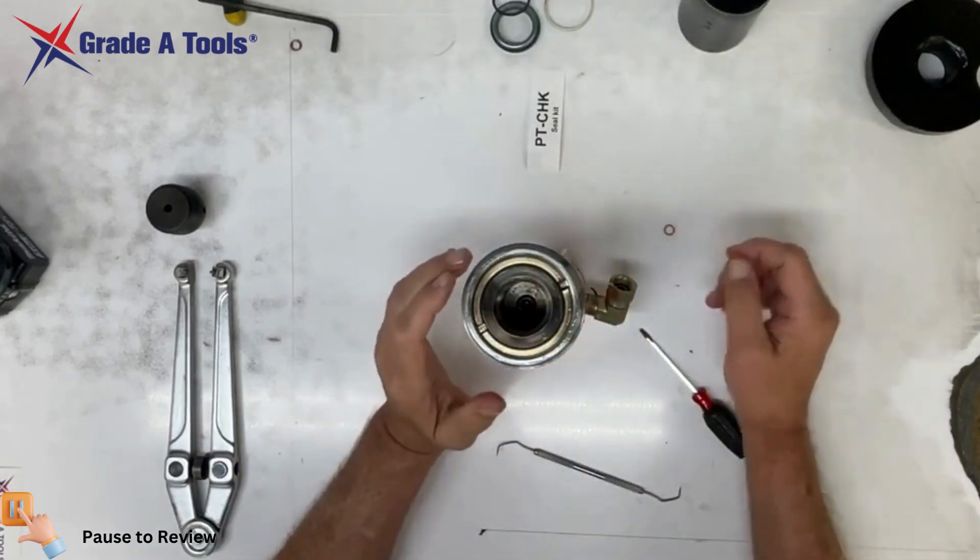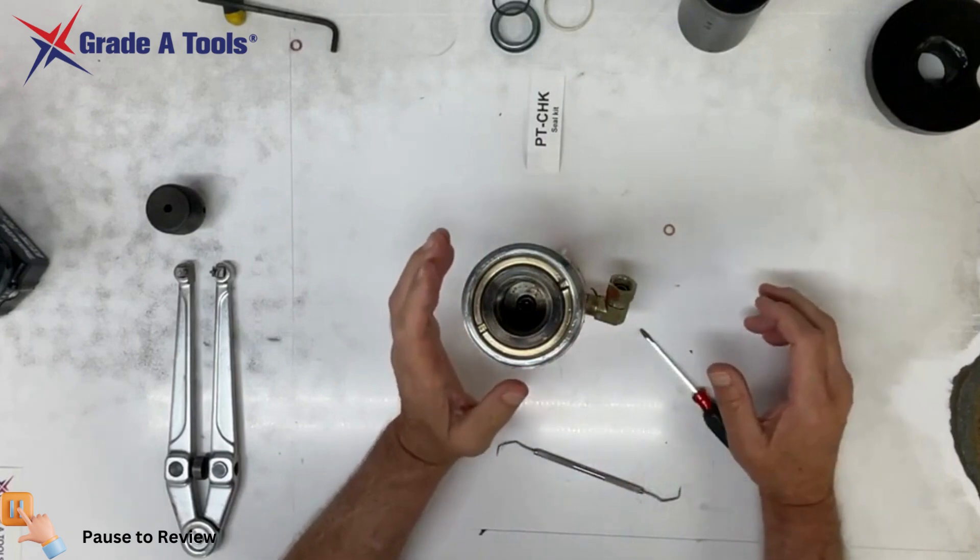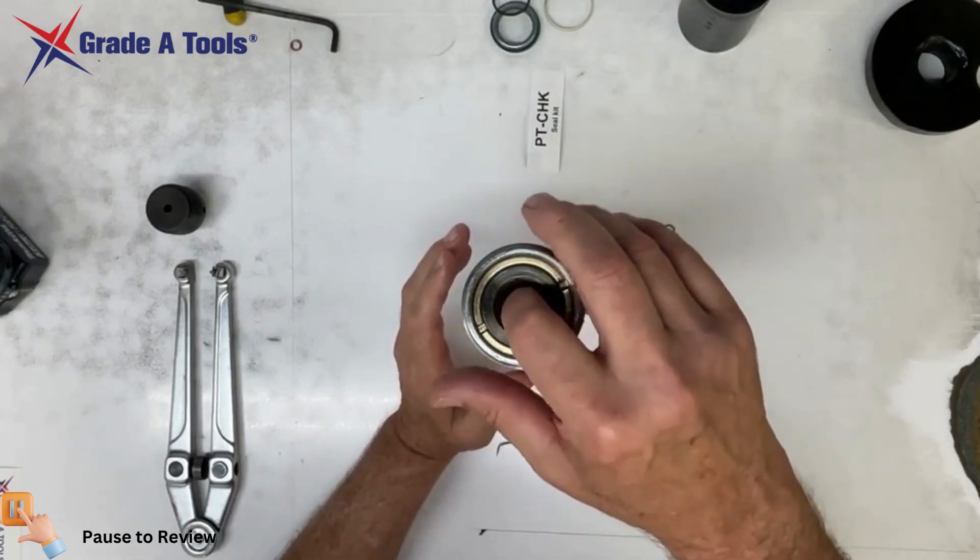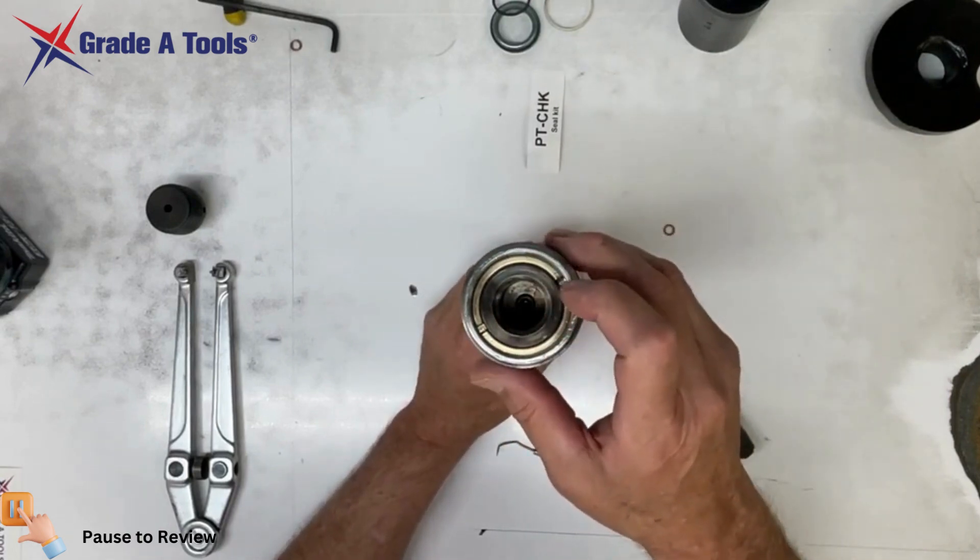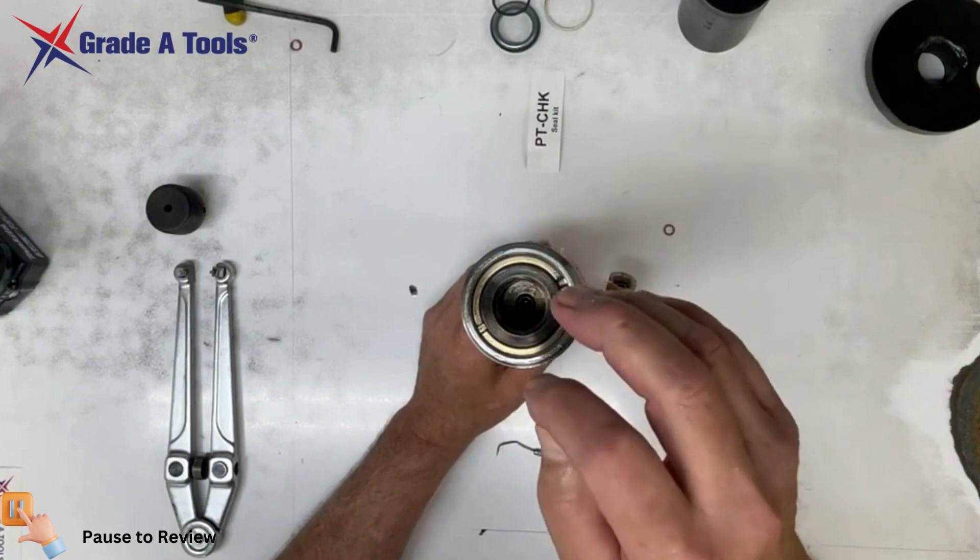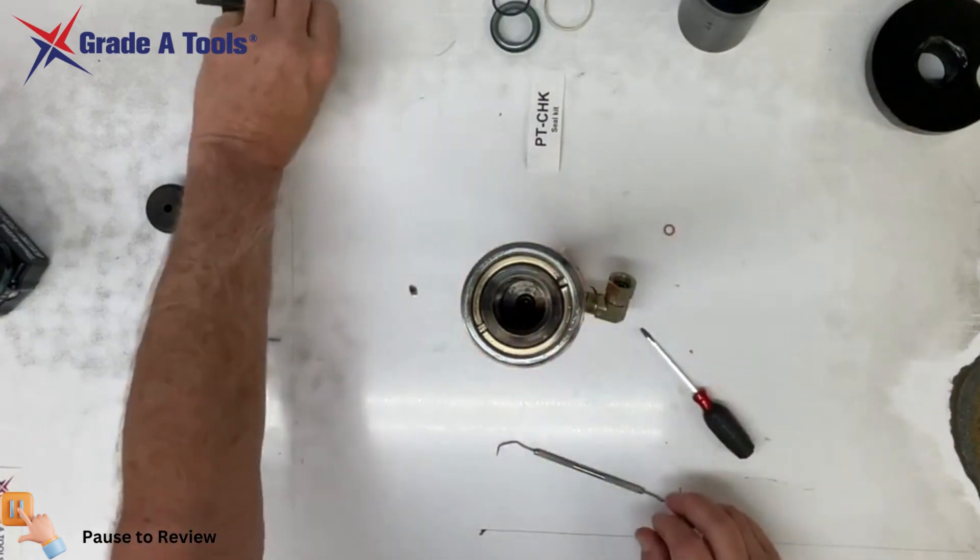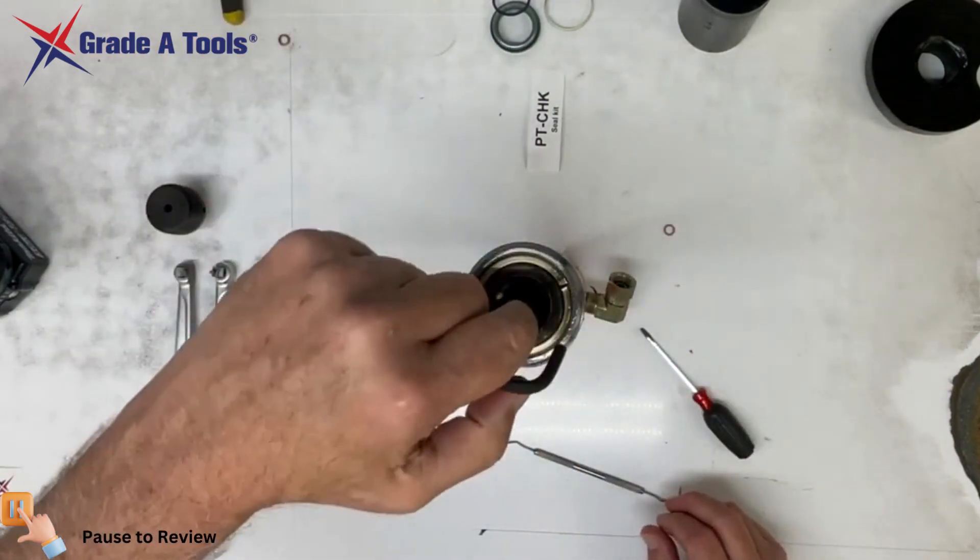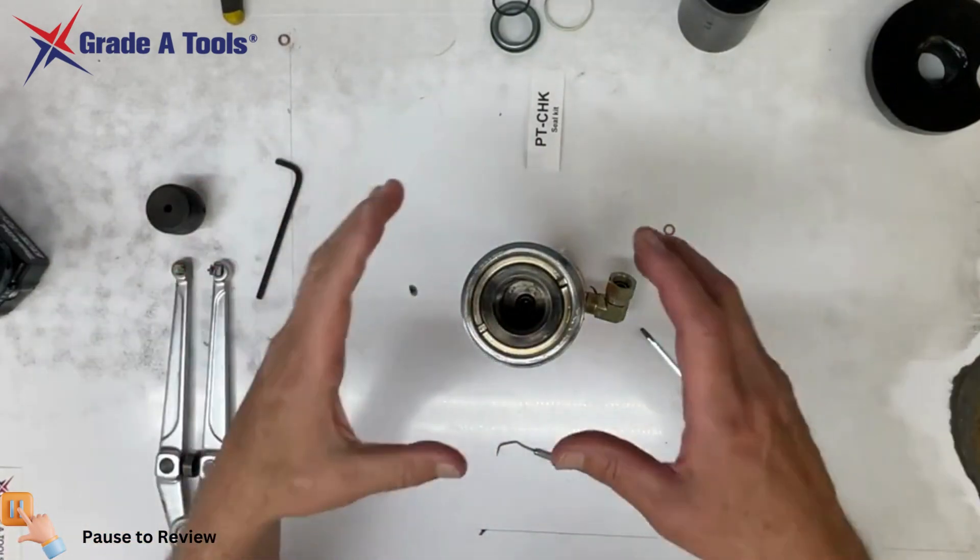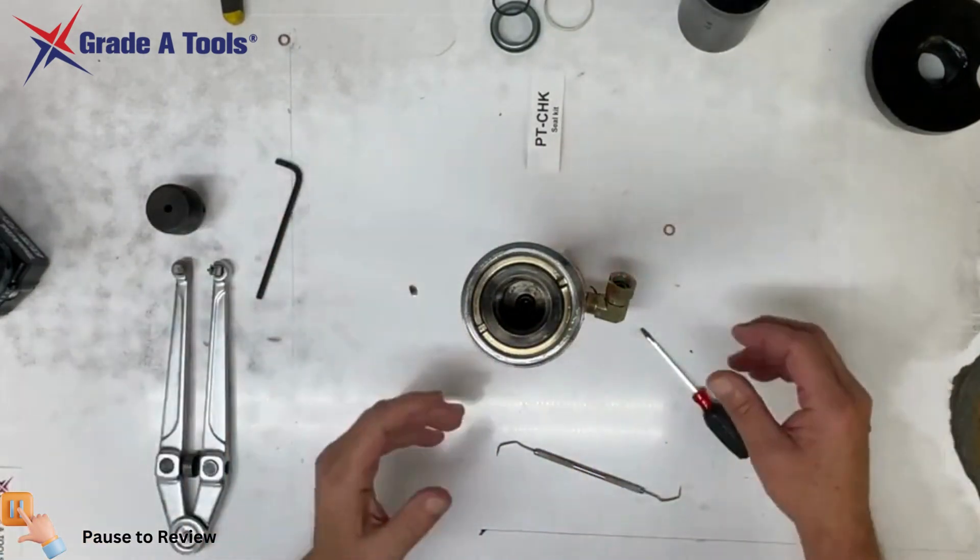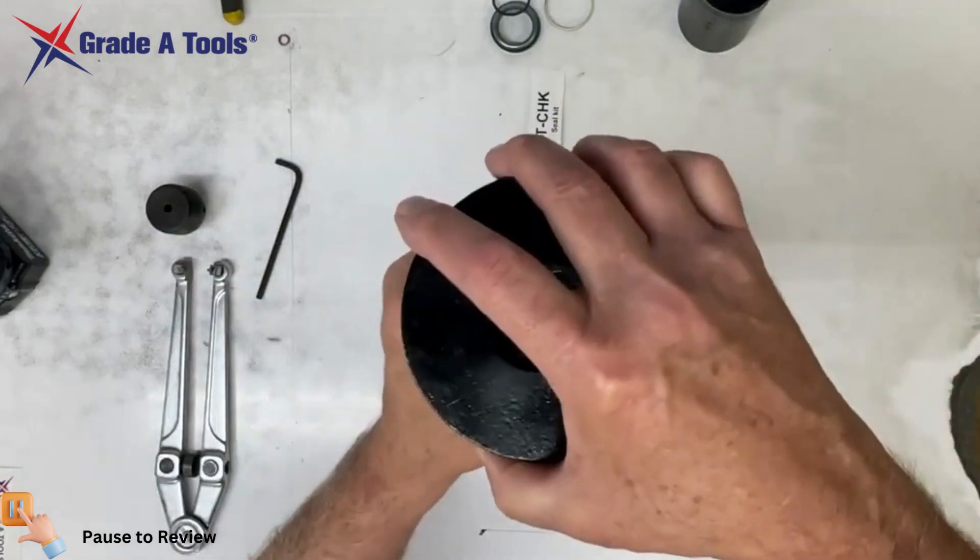If your ram is nice and clean and has not been damaged or opened, you may or may not need to replace this washer that's inside on this bolt. This is your bleeder port, so once you've put your ram back into the tower, you'll raise your tower all the way up.